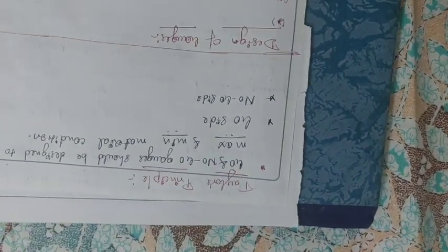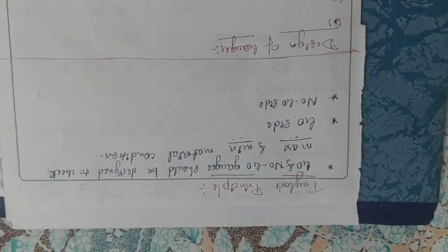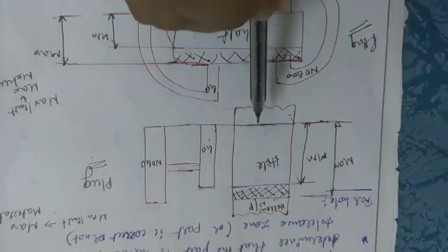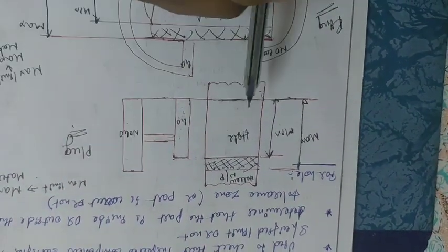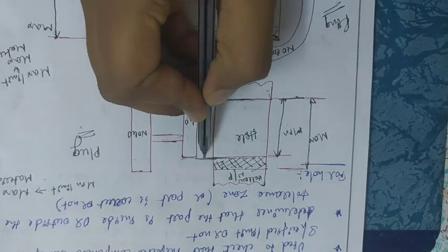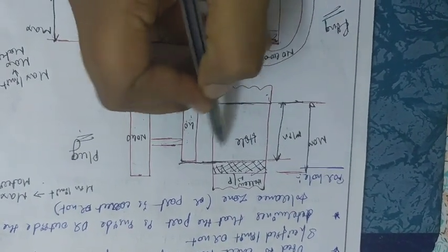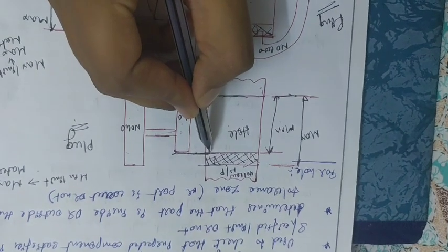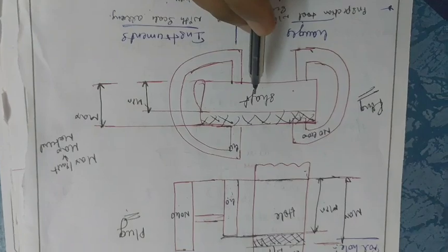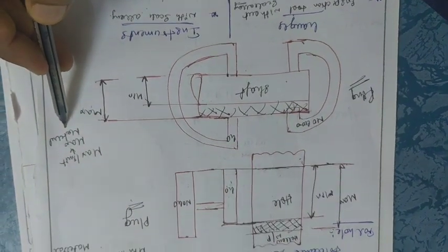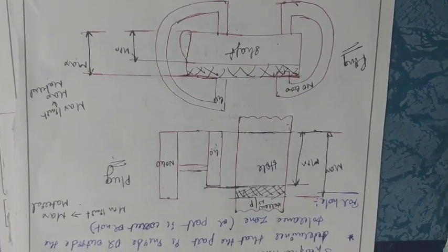The main important concept is Taylor's Principle. Taylor's Principle states that go and no-go gauges should be designed to check the maximum and minimum material condition. For a hollow workpiece, the minimum limit is the maximum material condition — we can remove material as per requirement, so we take the minimum limit as maximum material condition. For a shaft, the maximum limit is the maximum material condition.